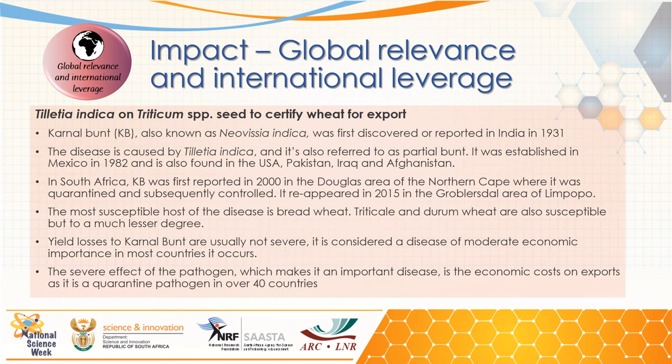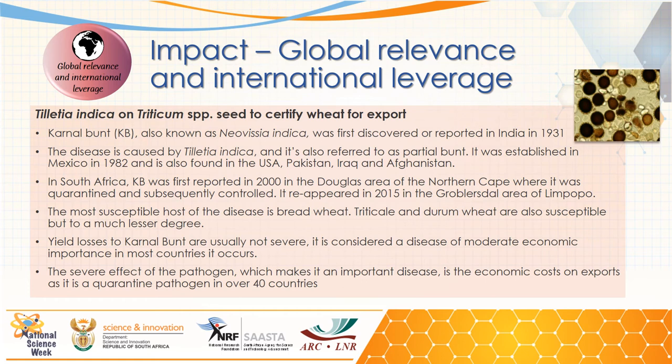Global relevance and international leverage: Coniothyrium is an important fungus on weeds, and wheat now has to be certified clear of this fungus before it is allowed to be exported. This has an impact on our global relevance and international reach. This disease was first reported in South Africa during 2015 in the Northern Cape, and more recently in Mpumalanga. The disease affects various weeds and is considered a disease of moderate economic importance in many countries.